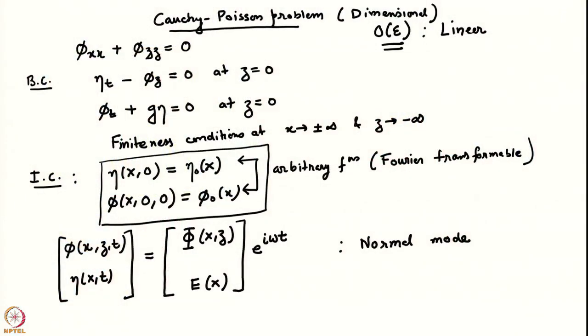We were looking at the Cauchy-Poisson initial value problem for surface gravity waves in deep water. We were trying to solve the linearized initial value problem where we had an initial arbitrary surface perturbation and an impulse in the form of a velocity potential at the surface. We wanted to express the answer in terms of these initial conditions, and we used Fourier transforms in order to make progress.